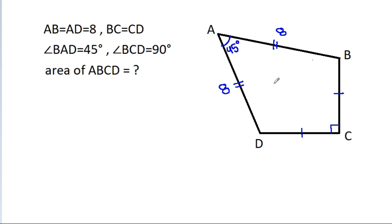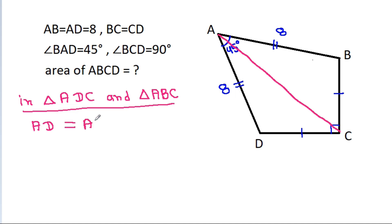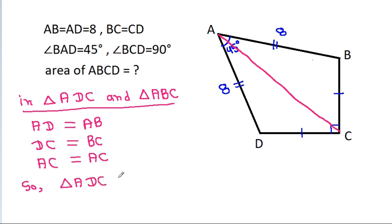So if we join AC, then in triangle ADC and triangle ABC: AD is equal to AB, and DC is equal to BC, and AC is common. So triangle ADC is congruent to triangle ABC.